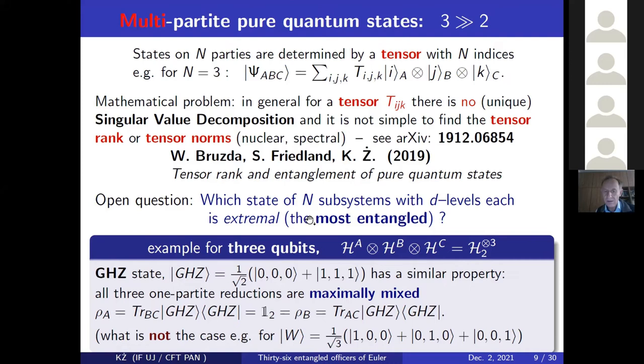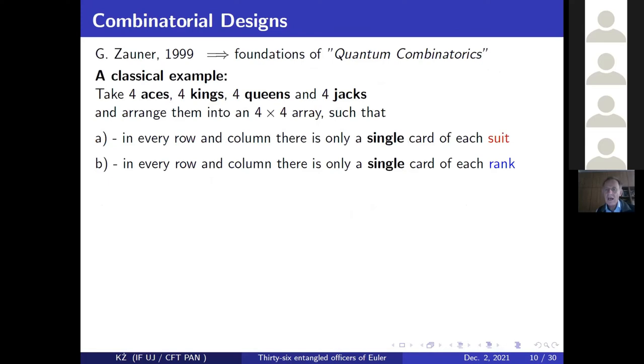So now, having such a family of pure states of three or more multipartite system, we can pose a legitimate question which of those states is the most entangled. For instance, for three qubits, we have GHZ states. It looks like this. But we also have a W state. And as you see, they are somehow different. They are not equivalent. So we can ask which of those states is more entangled. And the answer is simple. The answer is, we do not know. Why? Because it depends on which measure of entanglement you take into account.